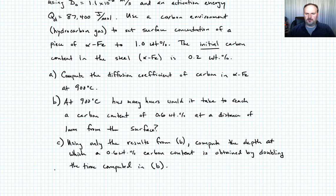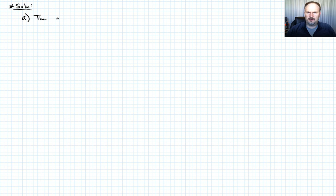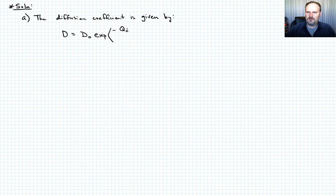Now let's write our solution. Part A: we take the Arrhenius form to compute the diffusion coefficient. The diffusion coefficient is given by D equals D-naught times e to the negative Q_D over RT — we'll call that equation 1.